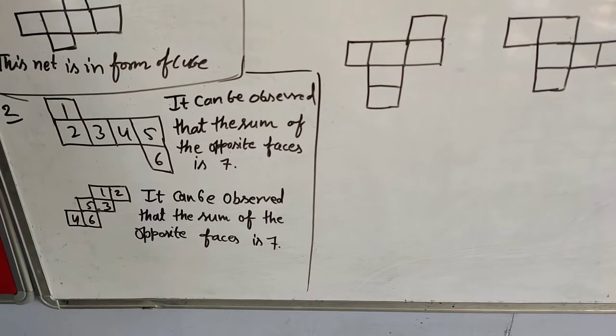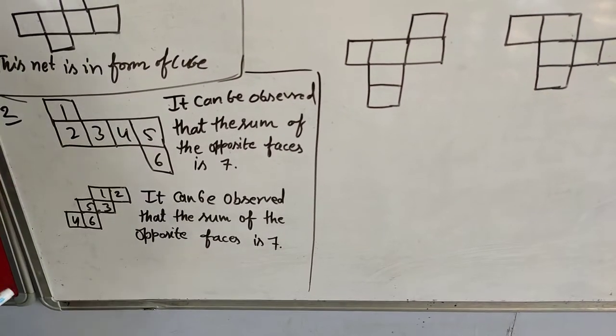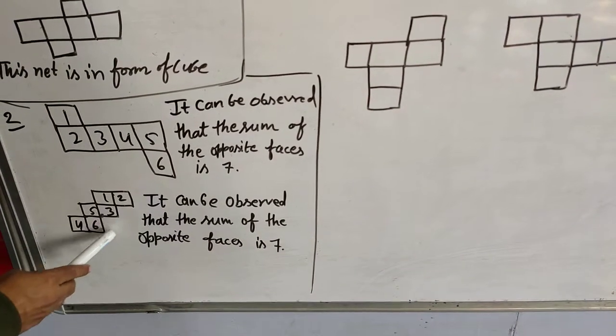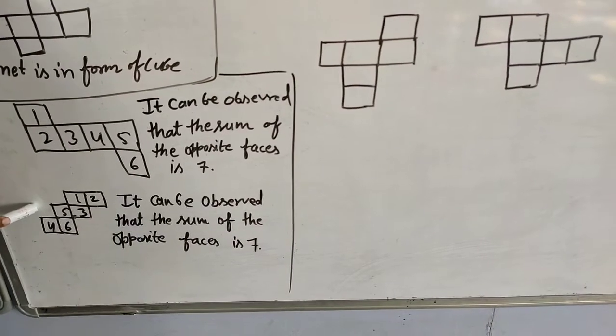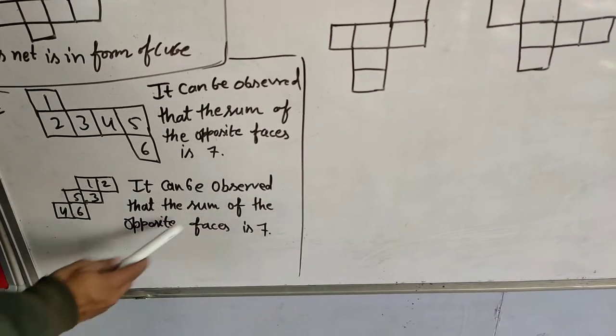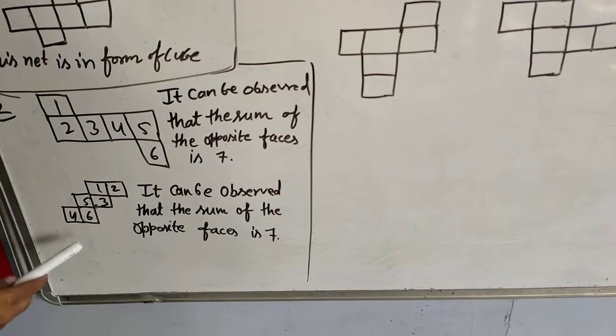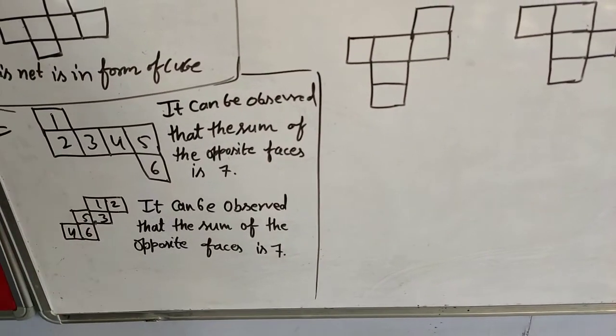You have to cut this type of net and make a cube. It can be observed that the sum of the opposite faces is 7. So you have to check that the opposite faces sum to 7.